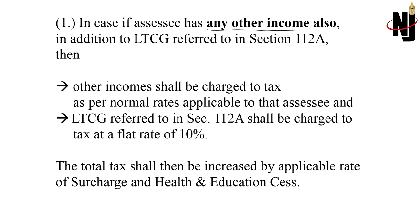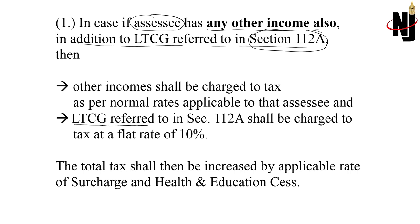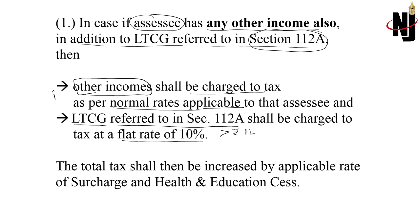Now let's start with the main concept. If an assessee — individual or HUF — has other income in addition to LTCG referred to in section 112A, then LTCG under 112A will be taxable at a flat rate of 10% exceeding the first 1 lakh rupees, and normal income will be taxed as per slab rate. Tax on other income must be computed first, and only then do we move to calculating tax on LTCG. The total tax is then increased by surcharge and health and education cess.